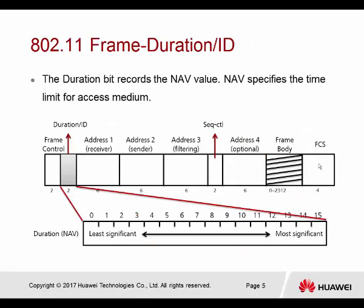The duration ID field records the NAV value and specifies the time limit for accessing the medium. The duration ID is located after the frame control and also has 2 bytes — 16 bits inside.